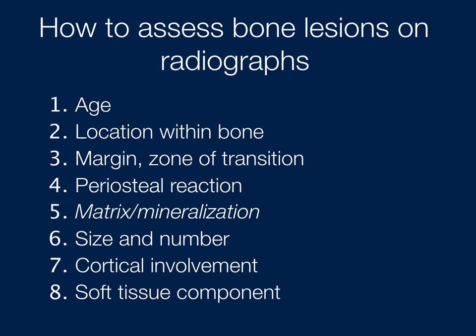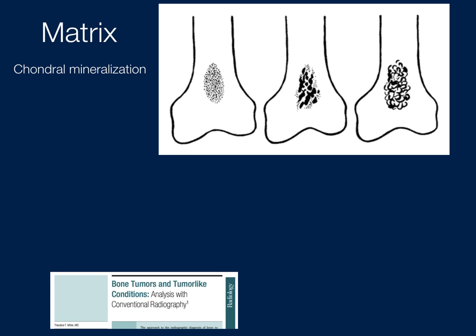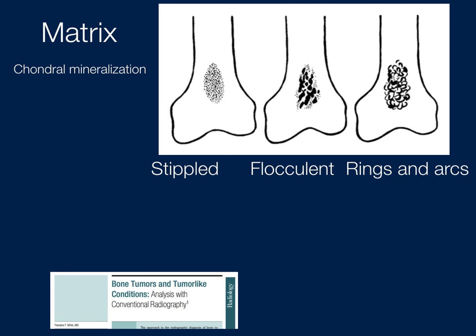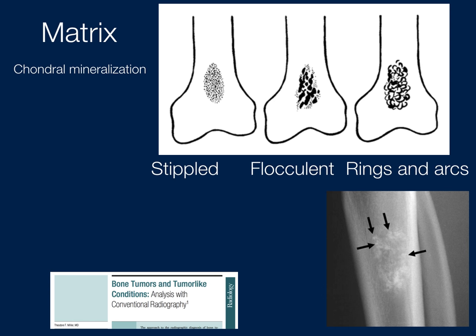Next is matrix mineralization. This is helpful if you can tell whether the lesion appears chondroid or osseous, as it helps narrow the differential. Examples of chondroid-type matrix include stippled, flocculent, and rings and arcs patterns — you see these in enchondromas.